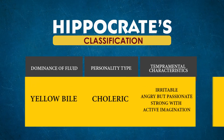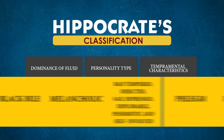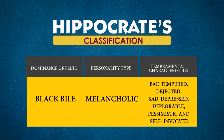The second type is choleric. What kind of fluid do they have in abundance? This is yellow bile. Their temperamental characteristics are that they are irritable and angry, but they are passionate and strong with active imagination. The third type is melancholic. These people have black bile in abundance. They are bad-tempered, most of the times dejected, sometimes sad, sometimes depressed, deplorable, pessimistic and self-involved.